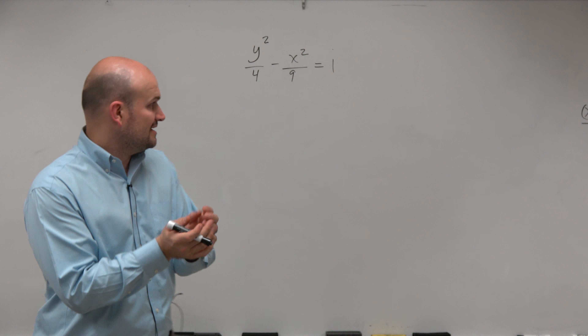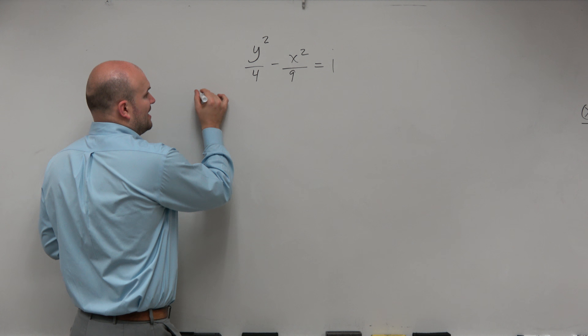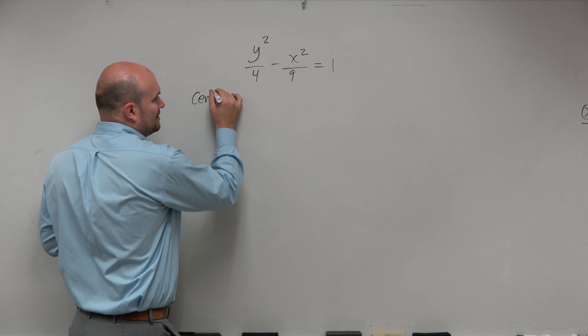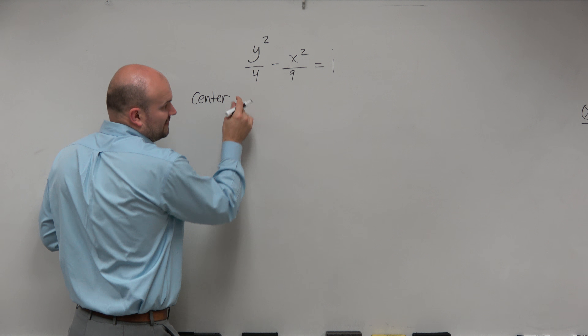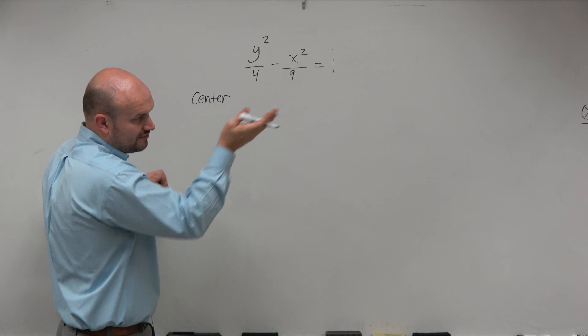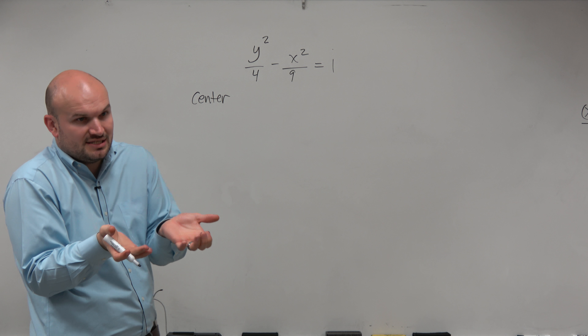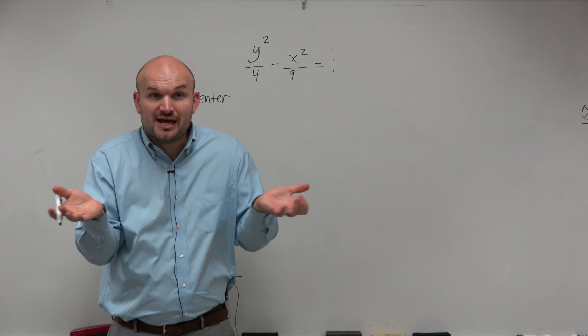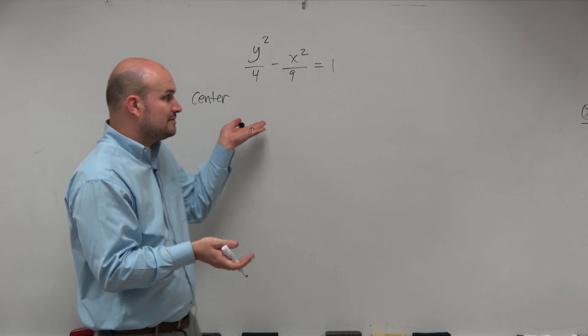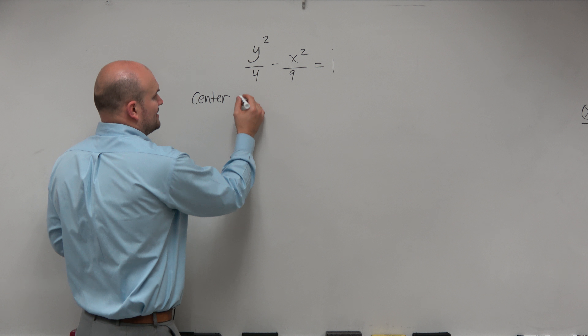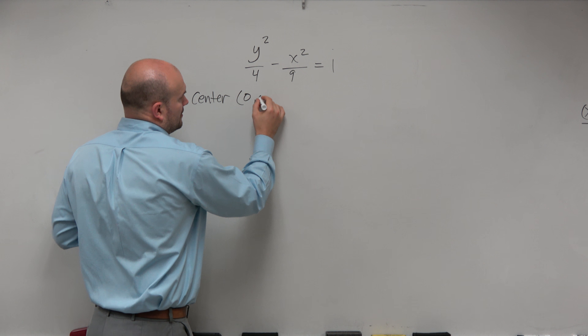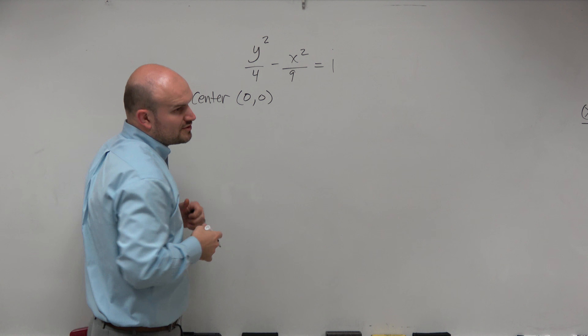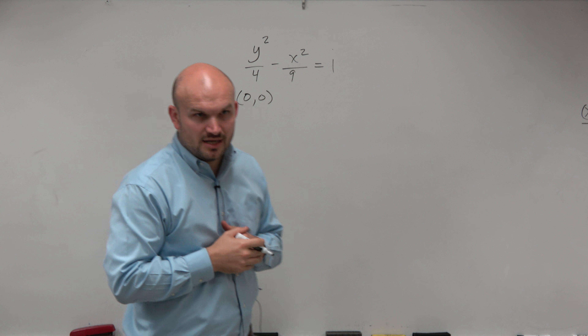The first thing I would say is the easiest to identify is the center. If you look at your standard formula equation, you see the center is your h, k. Well, obviously we're not subtracting anything, so 0, 0 is very easy to come by.